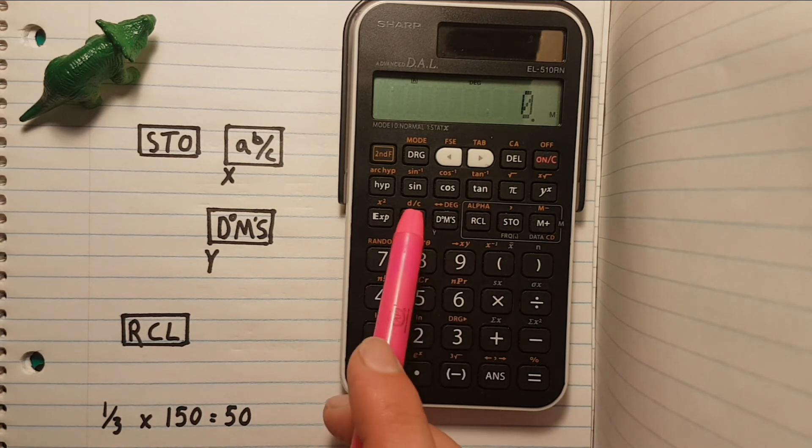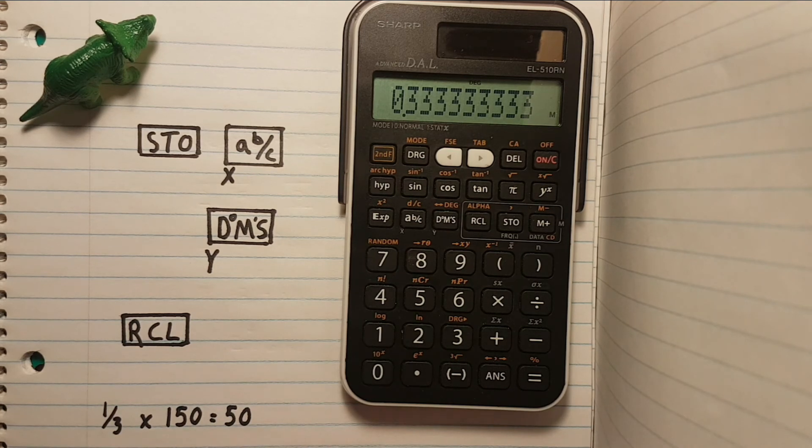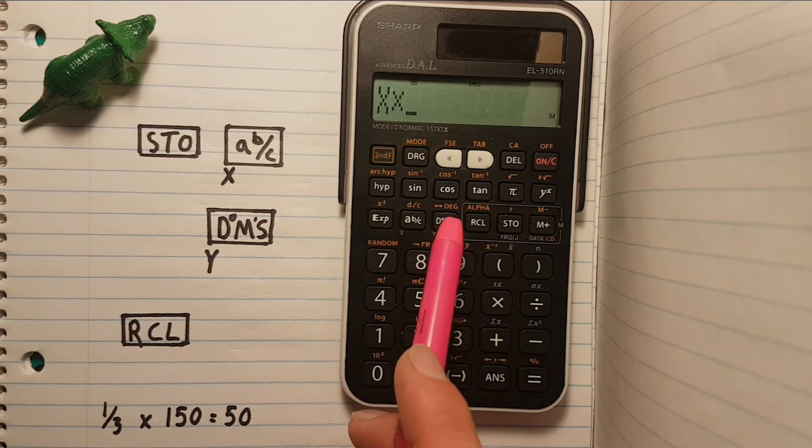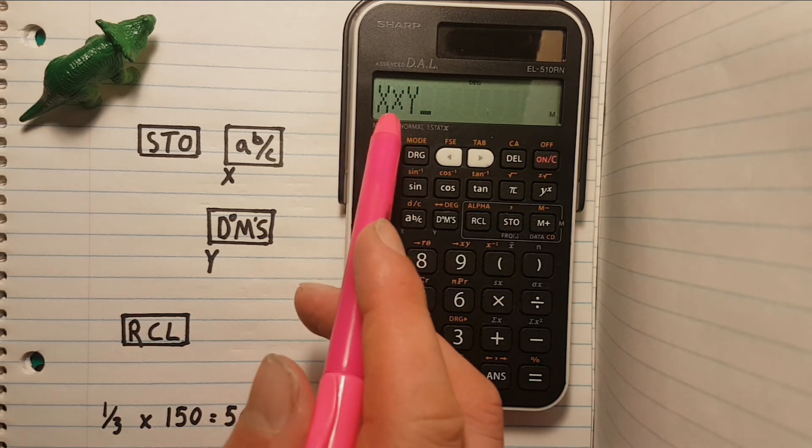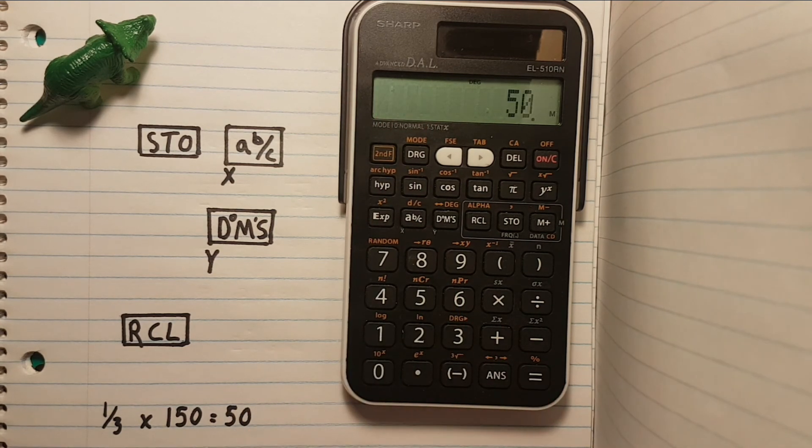So we'll recall X, that's our X variable, times, recall our Y variable. Now we see X times Y, press equals, and this is the result.